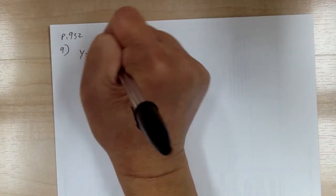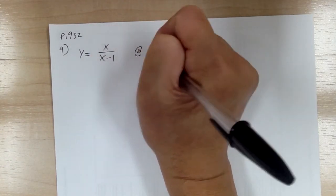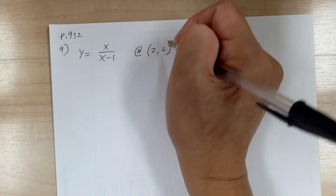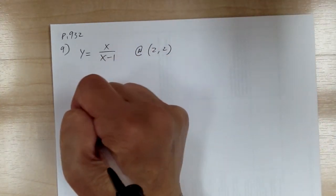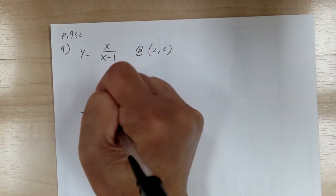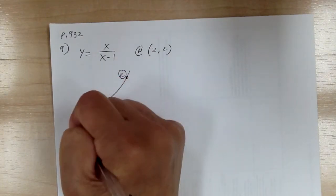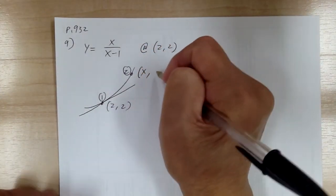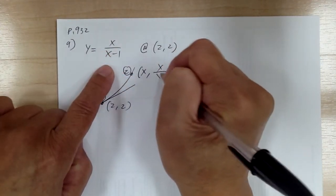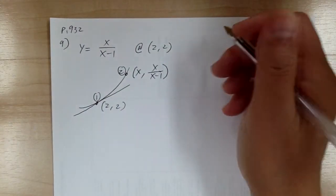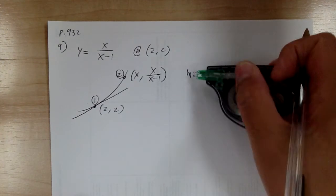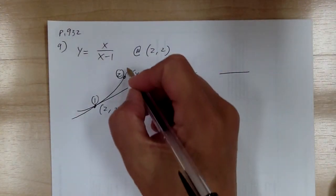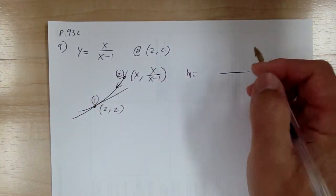Okay, let's go to number 9. You have y equal to x over x minus 1 at 2, 2. Again, you're looking for the equation of the tangent line. Sketch out your curve to visualize. The reason you have to use the limit is because it's a curve, and you have to approach to the point. If it's a straight line, you don't need the limit.